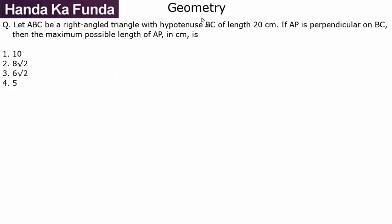Hi everyone, I am Ravi Honda and welcome to another question on geometry. Let ABC be a right-angled triangle with hypotenuse BC of length 20 centimeters. So suppose this is my right-angled triangle where the hypotenuse is 20. If AP is the perpendicular on BC, so this is my perpendicular AP,